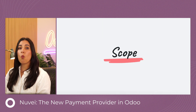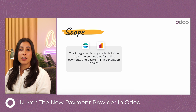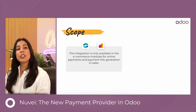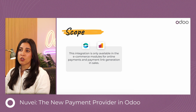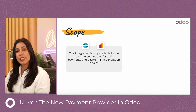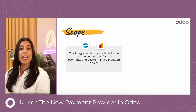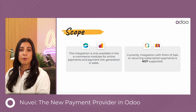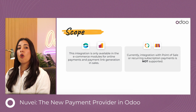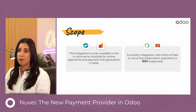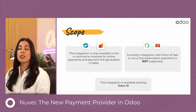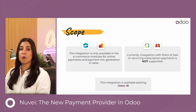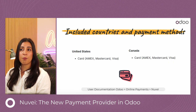What's the scope? This integration is only available in the e-commerce modules for online payments and in the sales app it can be used to generate payment links. The integration with point-of-sale or recurring subscription payments is not supported, and this integration is available starting with Odoo 18.